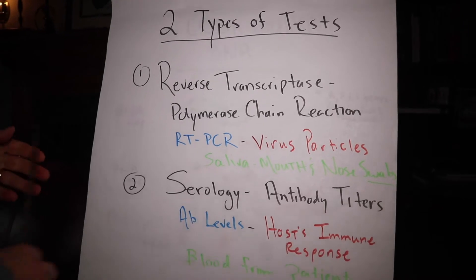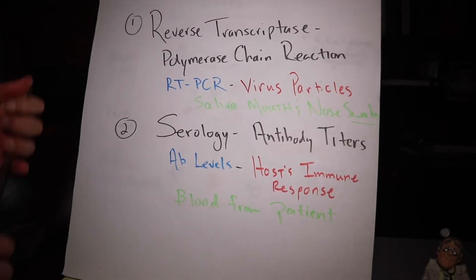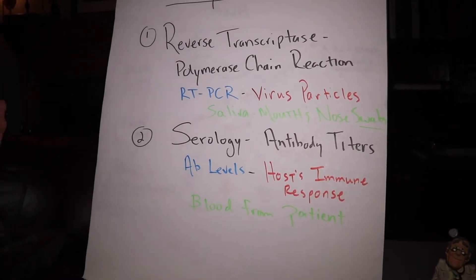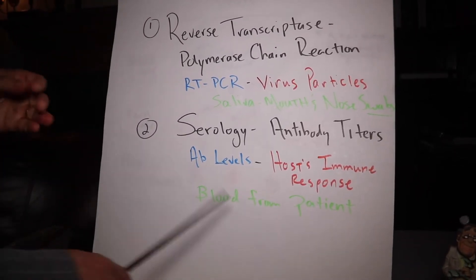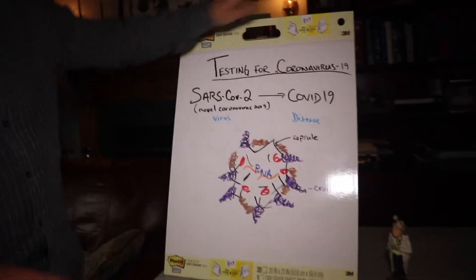The next one is called the serology or antibody titers. This is where we measure our body's own immune response, which are the antibodies or immunoglobulins. This is done using our blood. So, let's go back and look at the virus a little more closely.